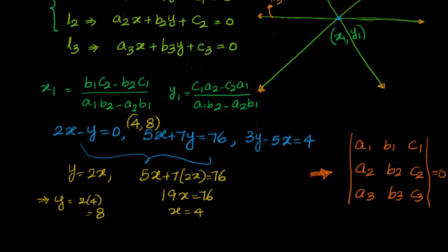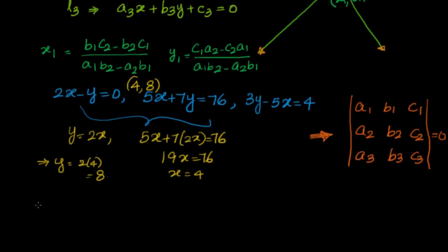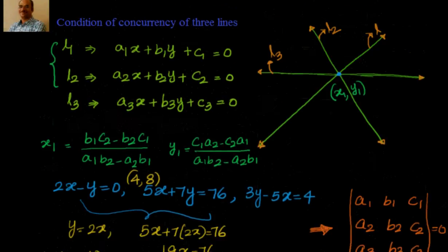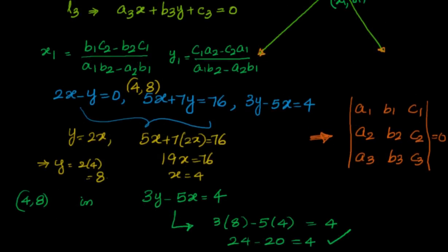Now we substitute (4, 8) into the third line: 3y − 5x = 4. If the three lines are concurrent, the third line should satisfy this point. Checking: 3·8 − 5·4 = 24 − 20 = 4, which is correct. So all three straight lines are concurrent, and their point of concurrency is (4, 8).